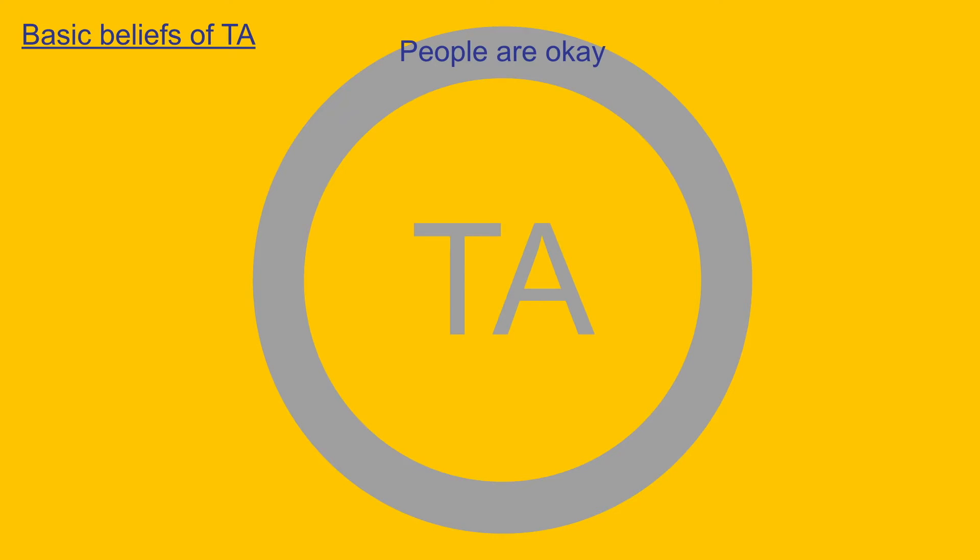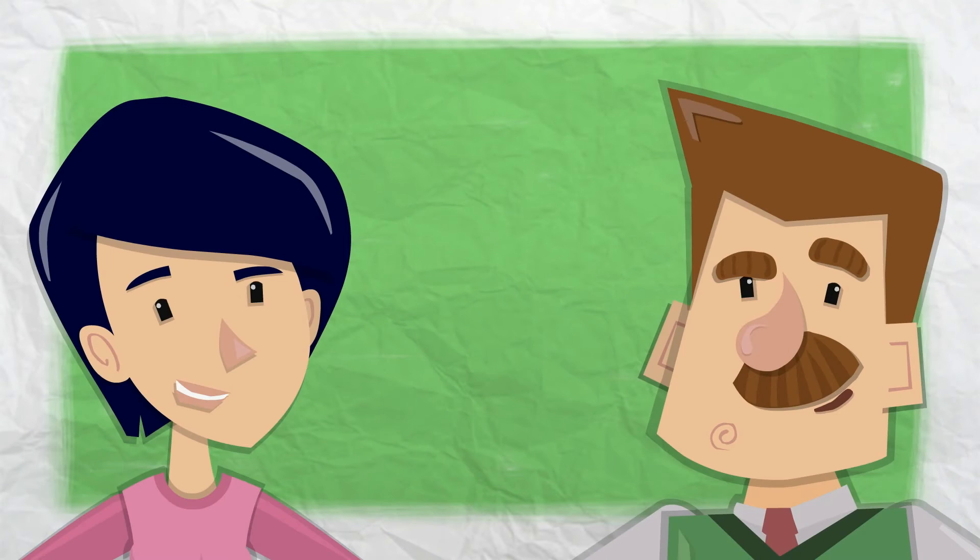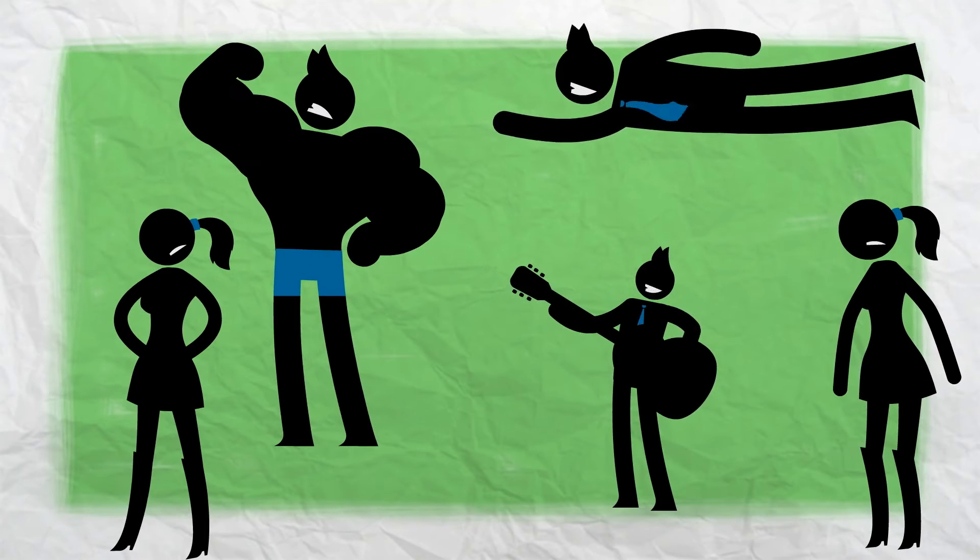Let's investigate every basic belief in greater detail. People are okay. It means that every human being is okay. No human being is superior to another one. No one is superior even if performance and success in life may vary.